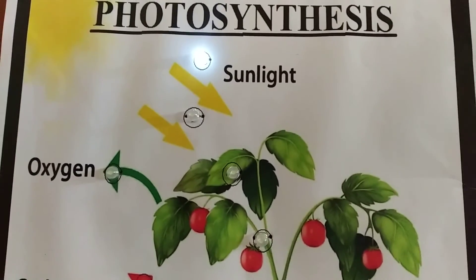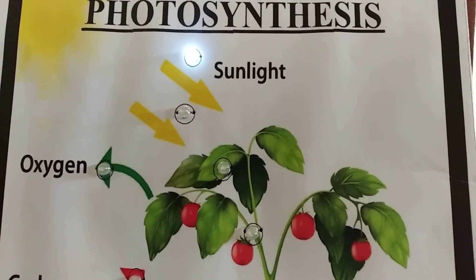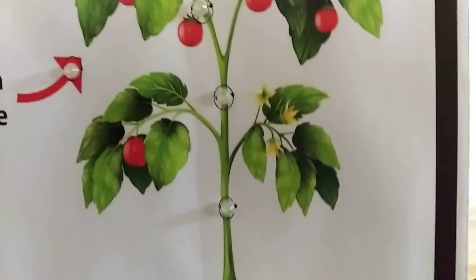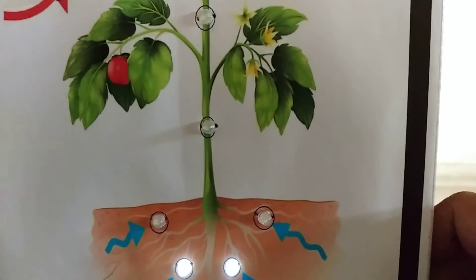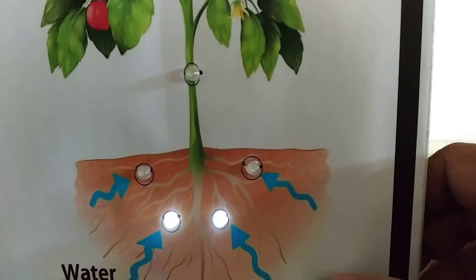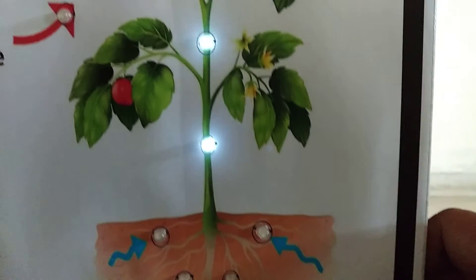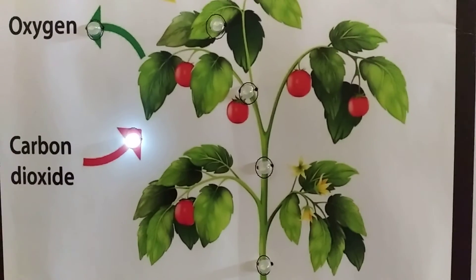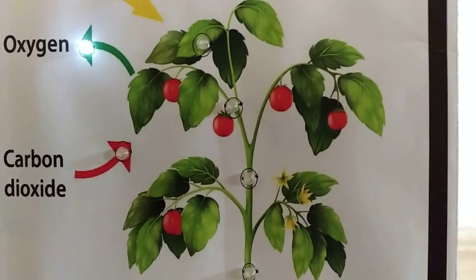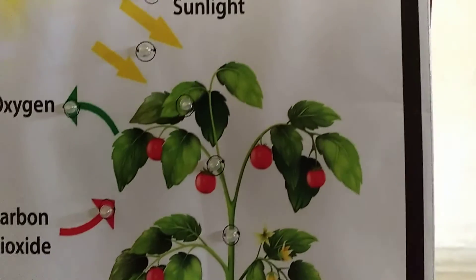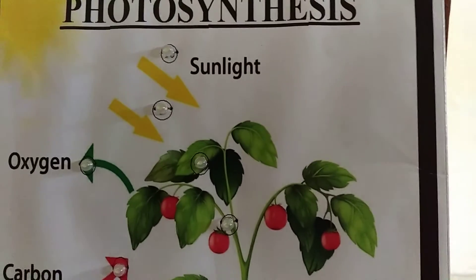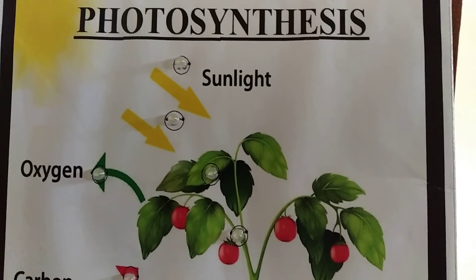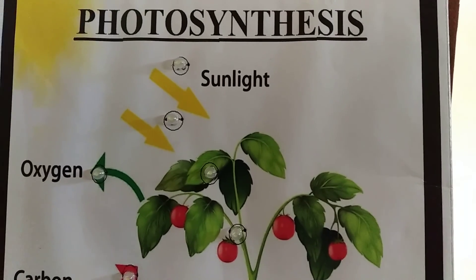Sunlight also helps and plays a role in the process of photosynthesis. So this is the overall process. Thank you students — to summarize: water goes upside, carbon dioxide is required, oxygen is liberated for us, sunlight is required, and finally photosynthesis is completed. Please like and subscribe to the channel. Thank you for watching.